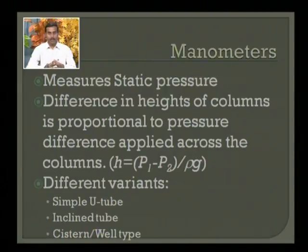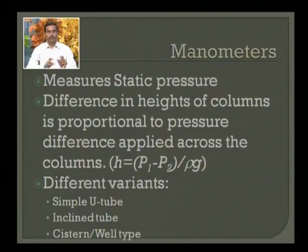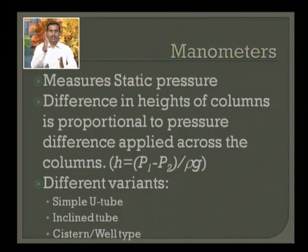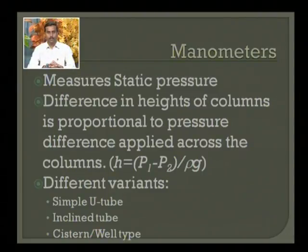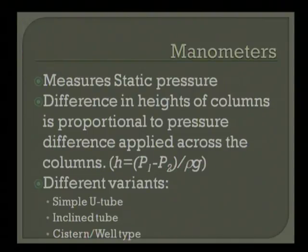Different variants of manometers are available. The simple U-tube is the one we are familiar with from physics laboratories. Another variant is the inclined tube manometer. The U-tube manometer has a resolution limited to about one millimeter. In the inclined tube, one tube is slanted at angle theta, and the diagonal measurement extends the range, providing comparatively larger resolution. The measurement technique remains the same, but the effective height being measured is extended.